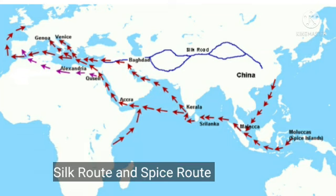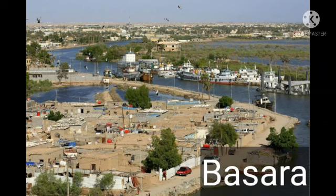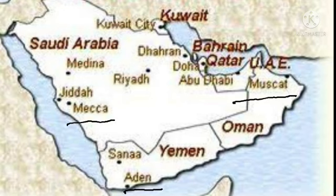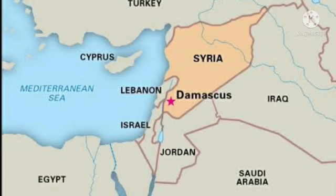The commodities coming through the Silk Route and the Spice Route were brought to Europe through these cities. One important port city of that time was Basra, on the banks of the river Tigris. Other important cities of the medieval period were Eden, Mecca, Muscat, and Damascus.